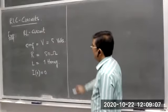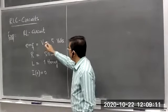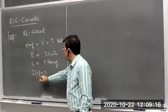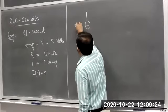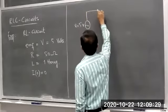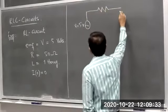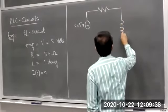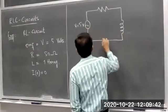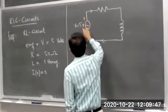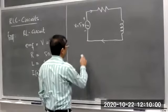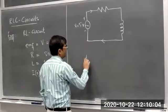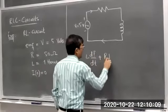We have an RL circuit. It has a battery — EMF force 5 volts — a resistor, and an inductor. The circuit is closed and current flows in this direction. We need to construct a differential equation and find the current at any time T. The differential equation for the RL circuit is L·dI/dt + R·I = V.